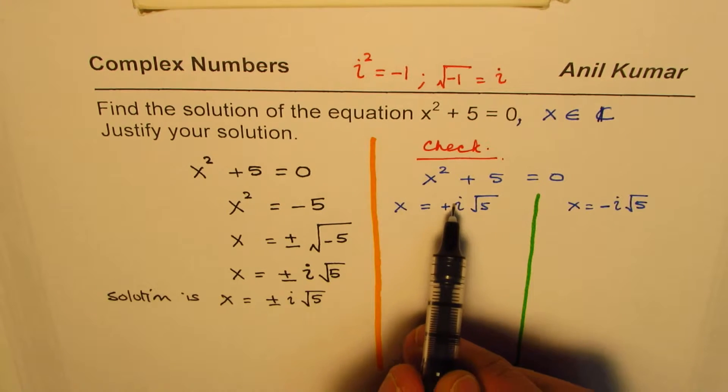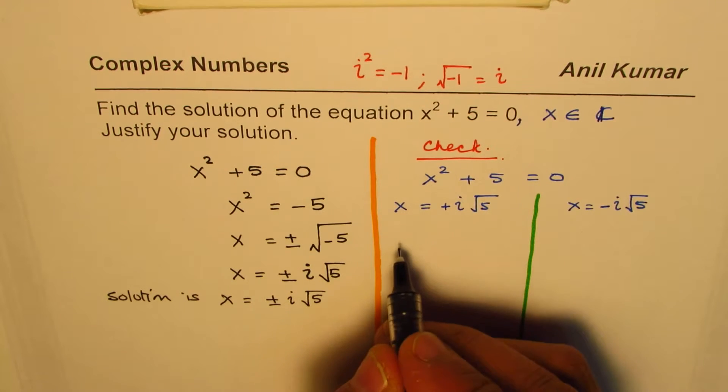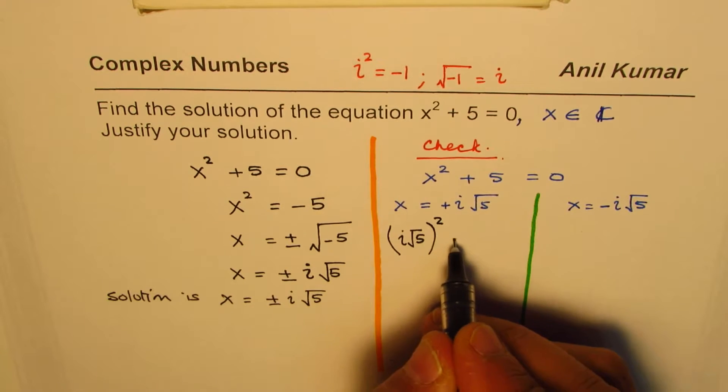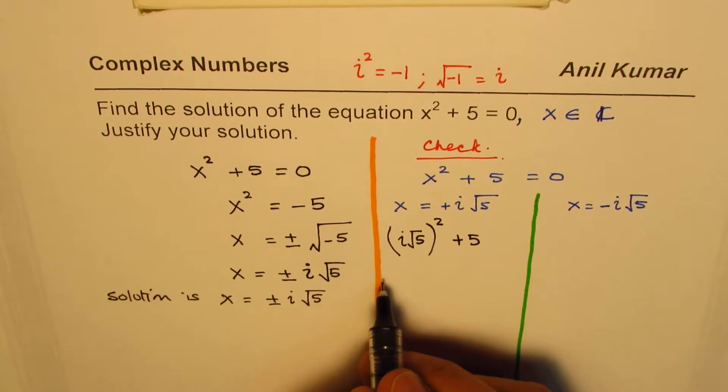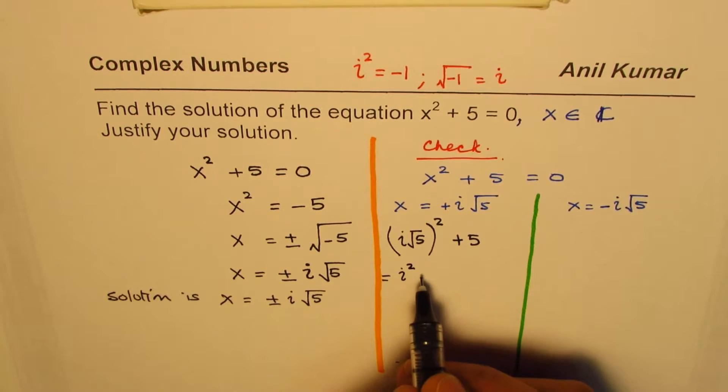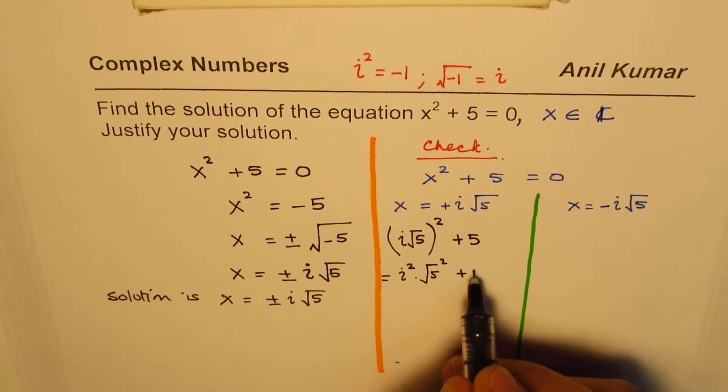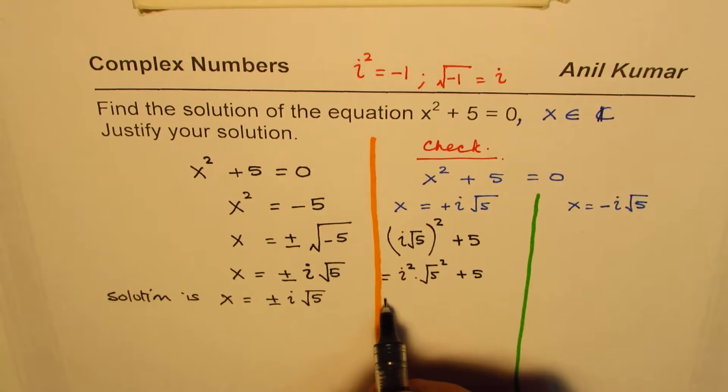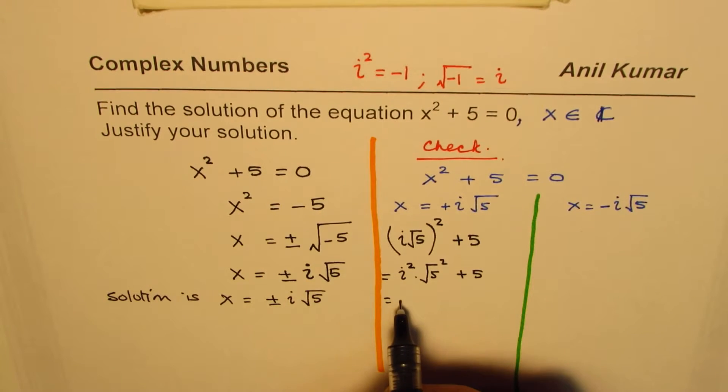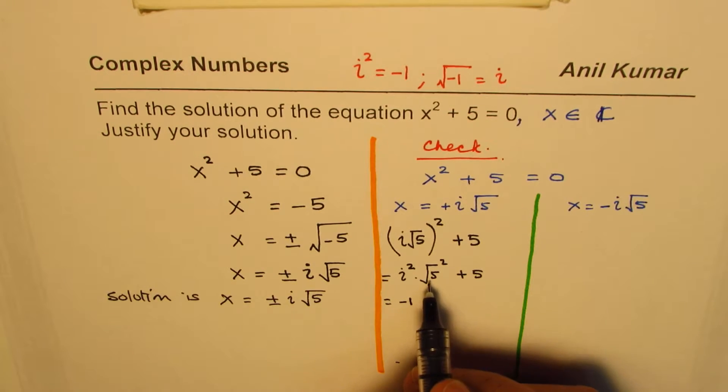If I substitute i√5 here, I get (i√5)² + 5. What is this equal to? Now, the square of i, I could write like this, and then square root squared, plus 5. I'm adding these steps for clarity. You need not even write this. i² is -1, and the square of square root is 5, so you get 5.